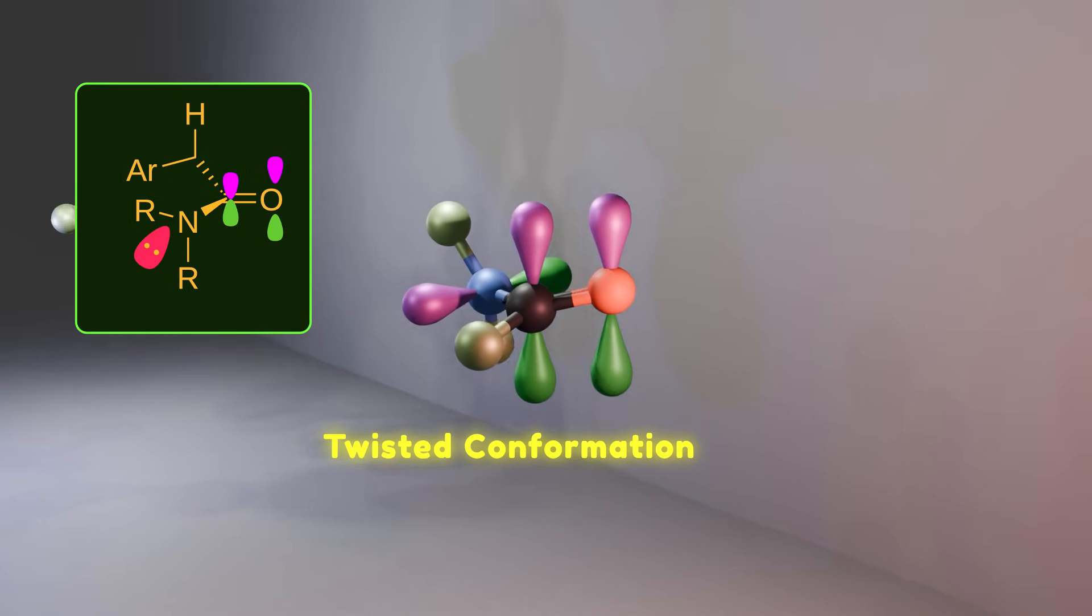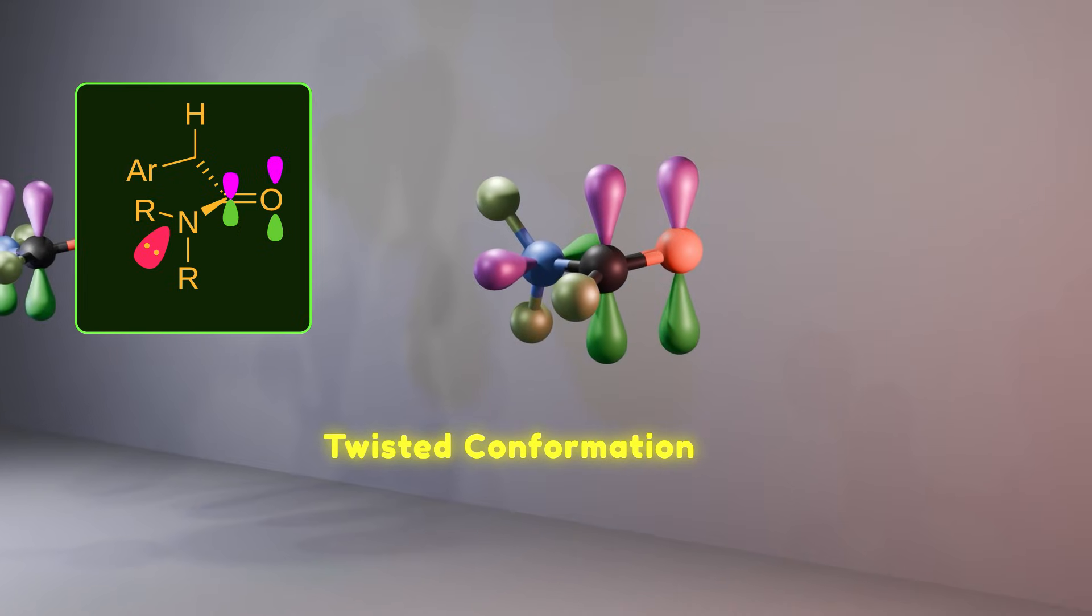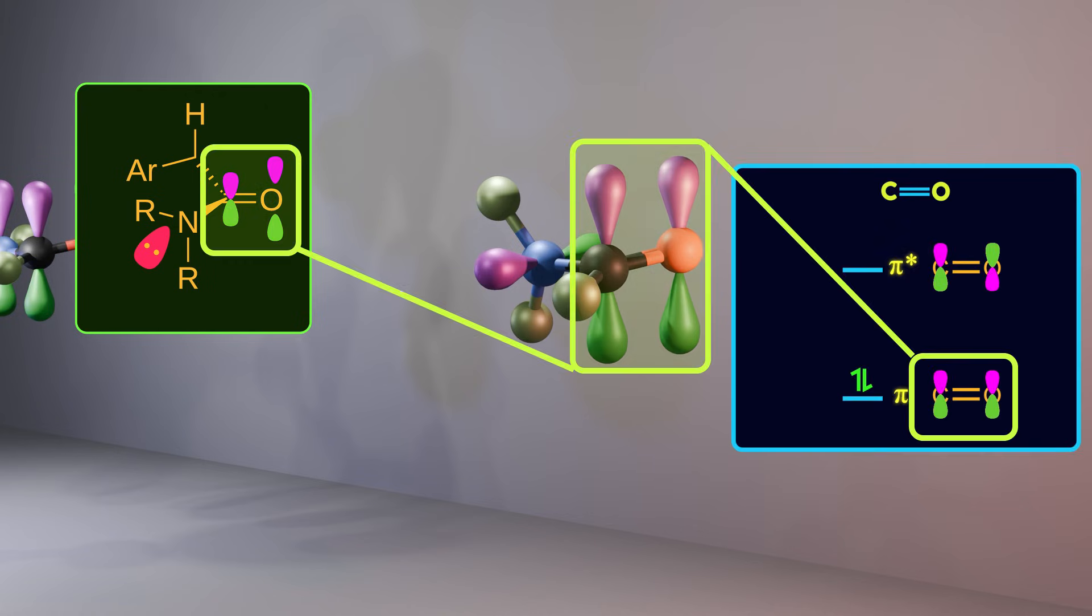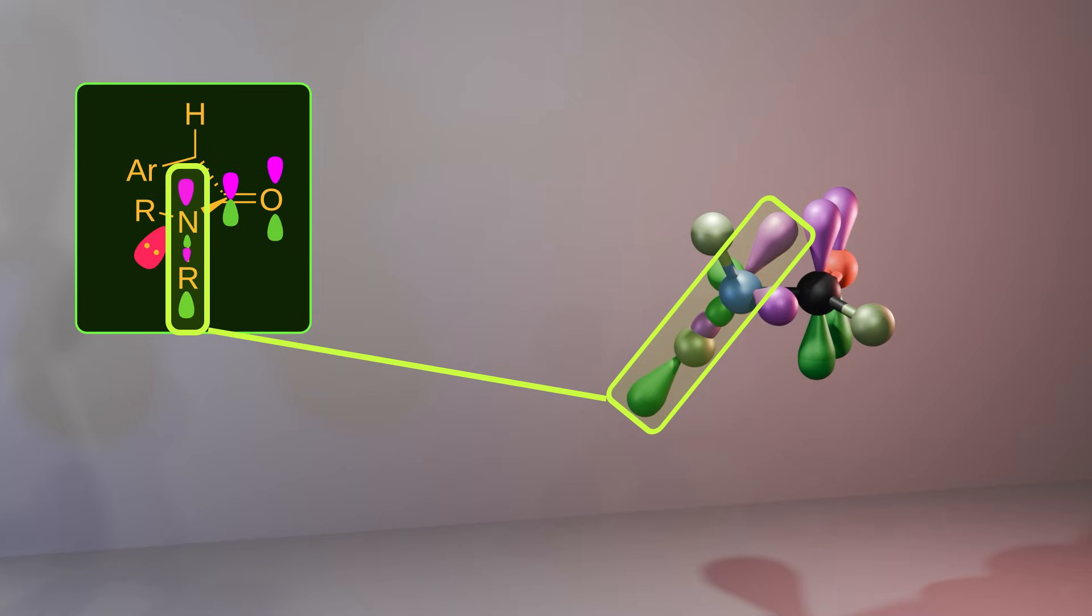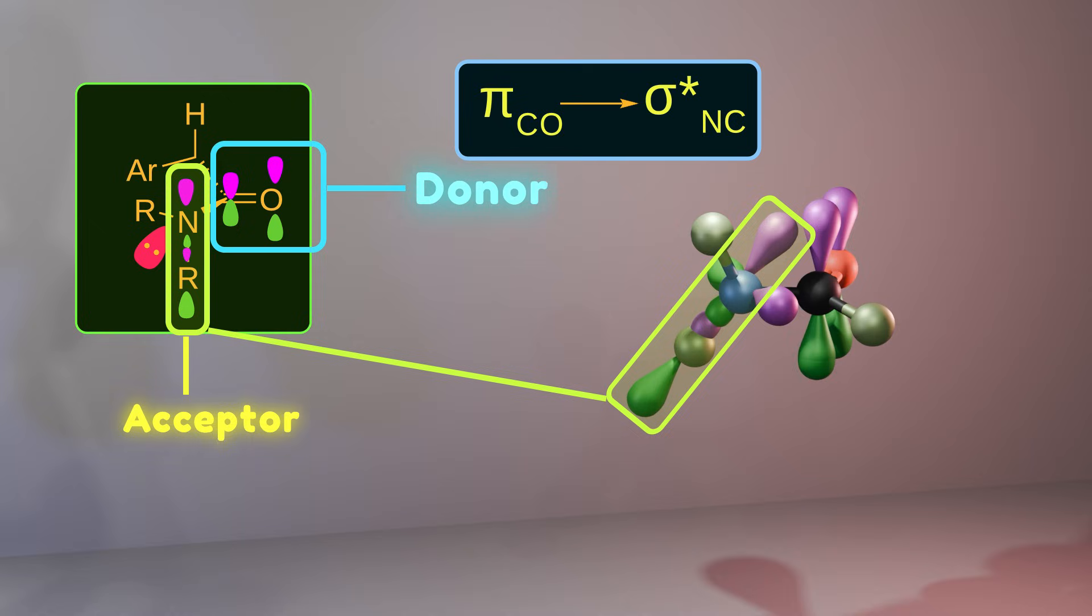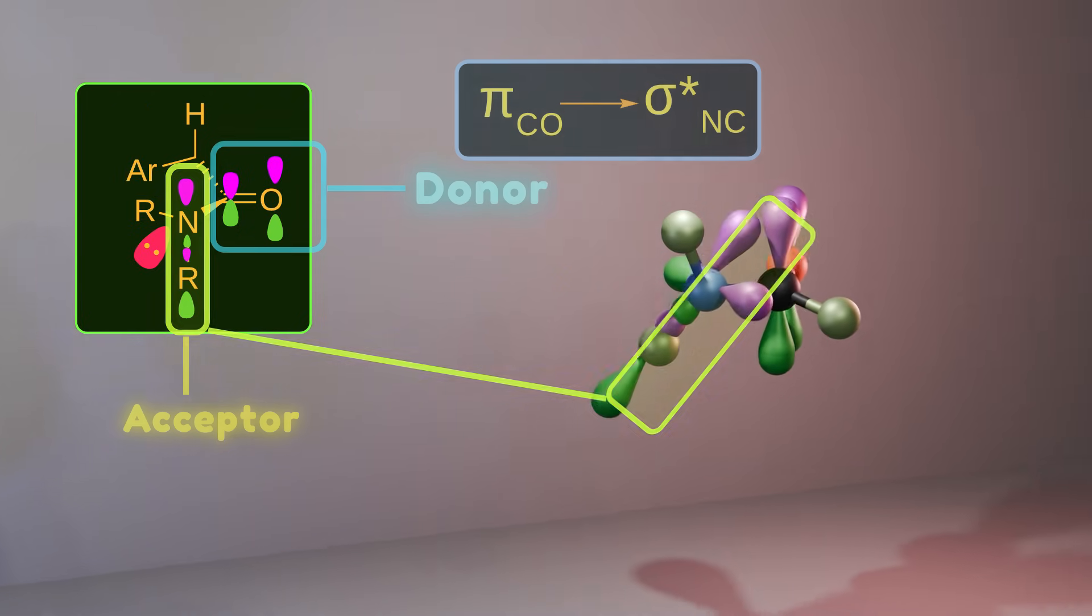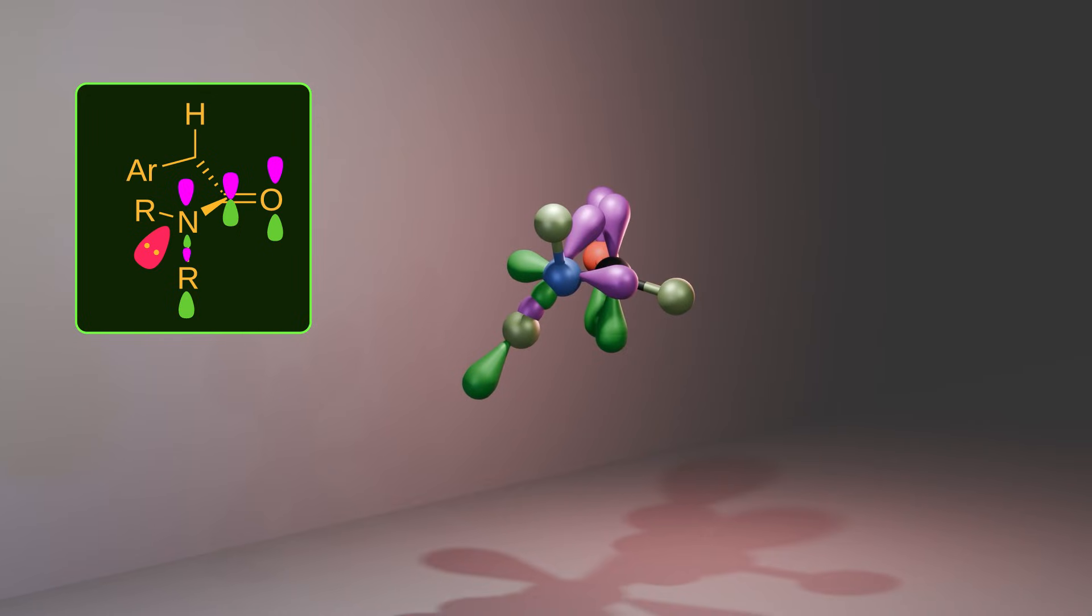Instead, we get another type of orbital interaction, one you might not be familiar with. Because of the rotation, the carbonyl group now uses its pi electrons. The filled pi orbital of the carbonyl group interacts with the anti-bonding orbital of the carbon-nitrogen bond. So now the carbonyl group is the donor and the nitrogen atom is the acceptor. In other words, the pi electrons from the carbonyl move into the empty anti-bonding orbital of the carbon-nitrogen bond.